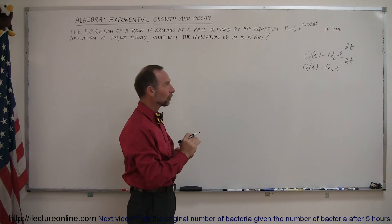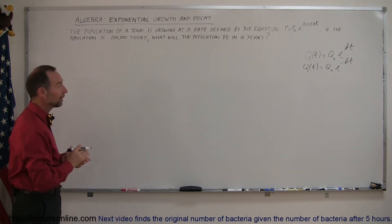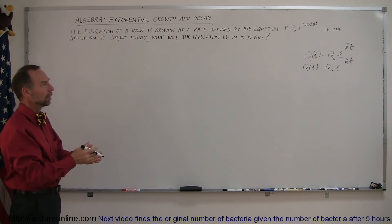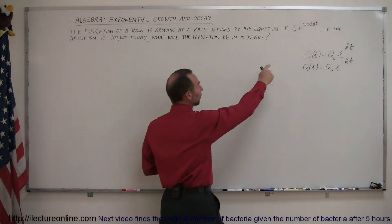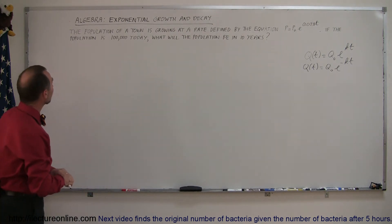All right, so that's the general equation that we're going to be using. In this particular example, q stands for quantity, but we can also use the letter p for population and things like that. So let's look at our example.